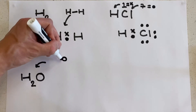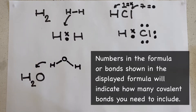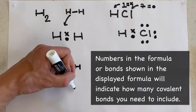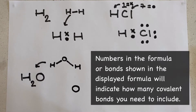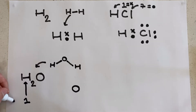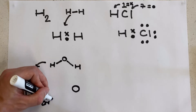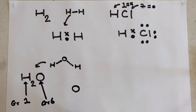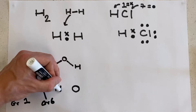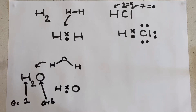Our next example is H₂O, and it's the first example we've had which has a central atom surrounded by multiple other atoms. Here the oxygen is central and it's surrounded by the hydrogens. I've given you a displayed formula diagram just next to the formula of H₂O so you can see the positioning of the bonds, although you don't have to maintain these positions all the time. Each line in a displayed formula diagram represents a dot and a cross in a dot and cross diagram, so even without knowing the group numbers I would be able to draw a good proportion of the molecule based purely on the displayed formula.